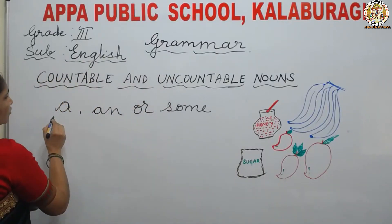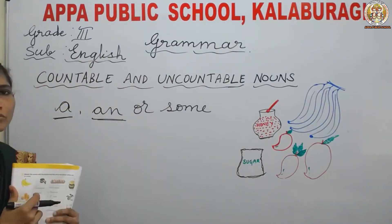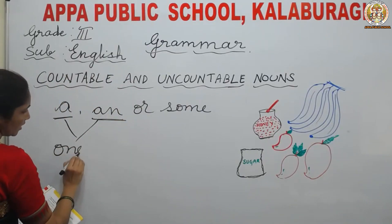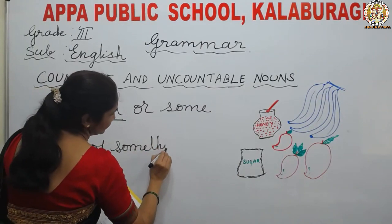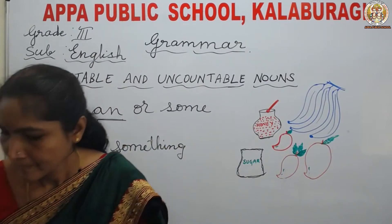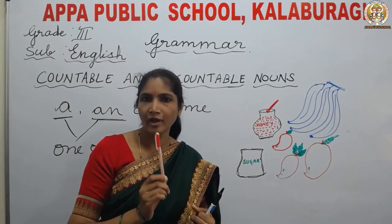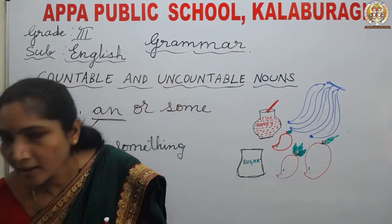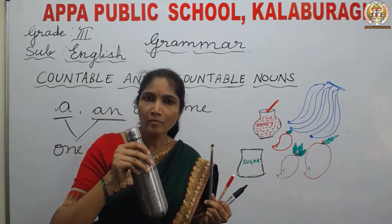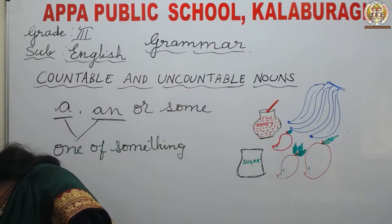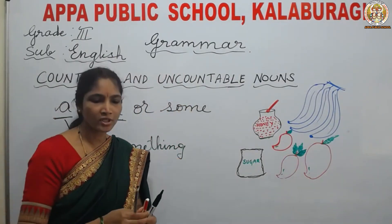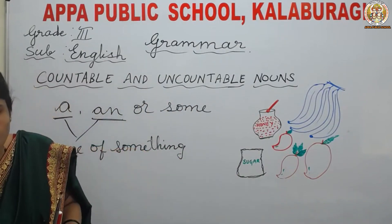When do we use a or an? We use a or an when there is one of something. For example, a pen — this is a pen, we have to use a. A paintbrush, and here we have a bottle — we have to say a bottle. In the same way, a duster — we have to say a duster. We use a in front of the noun which is countable and when it is only one.